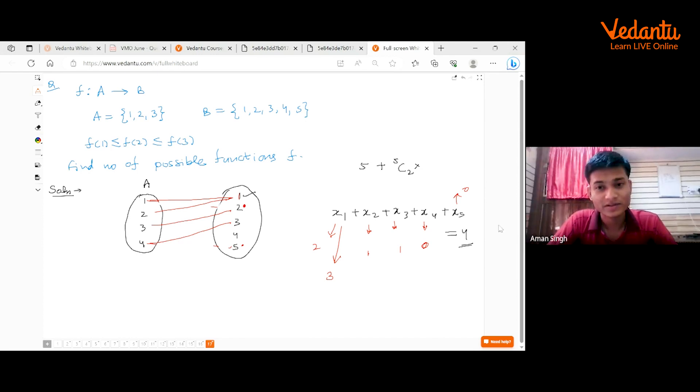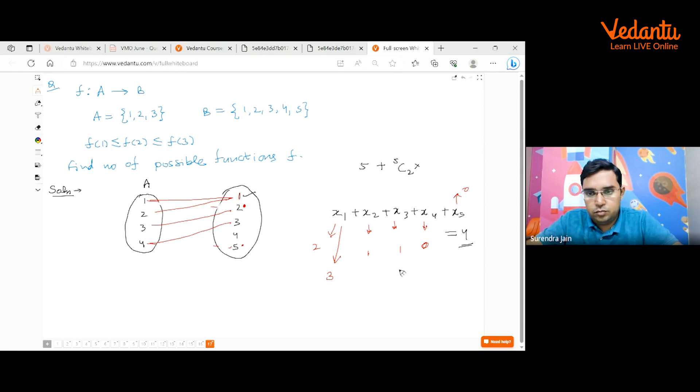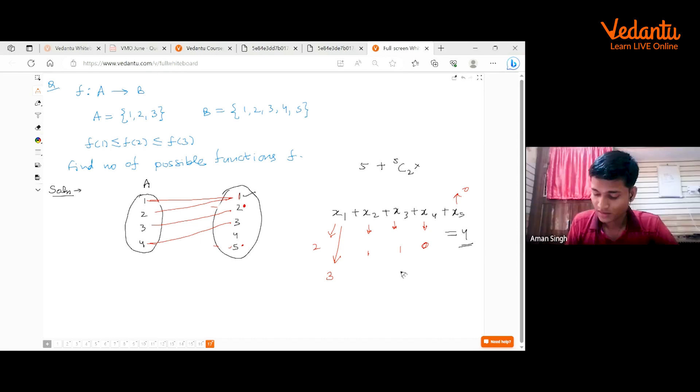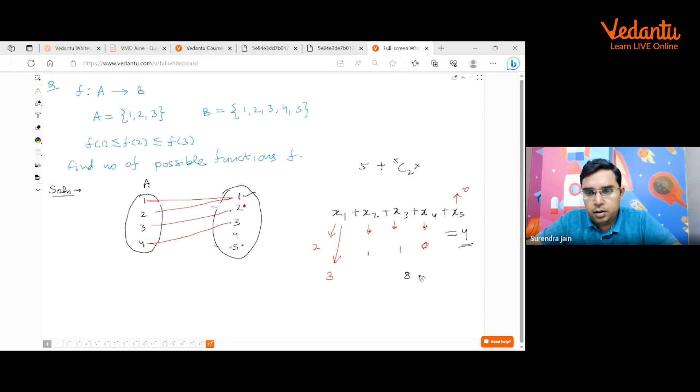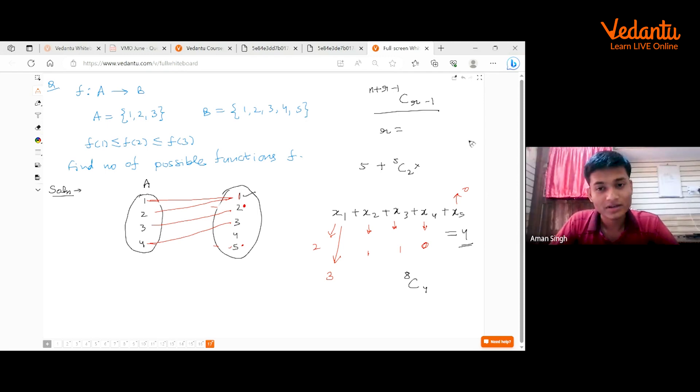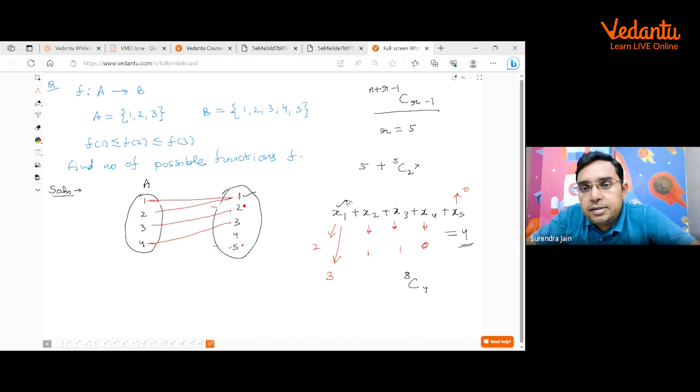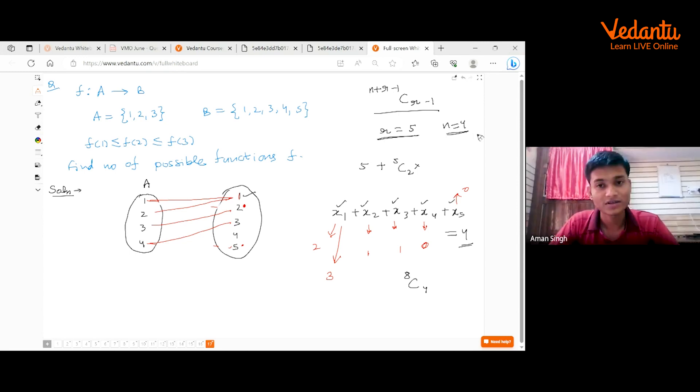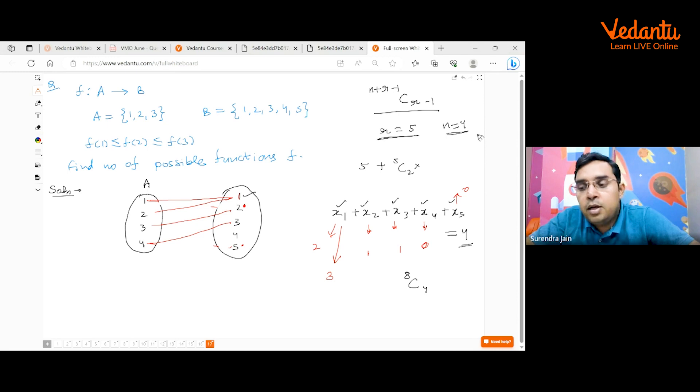So n plus r minus 1, r minus? Kitna aya solve? 8C3? 8C4. C3? 4? 3? 4? Minus one Cr minus one, yes sir. R kya hota is me sir, yeh four ho ga ya nai, r yaha pe five ho ga. Yeh number of beggars hai, yeh x₁ + x₂ + x₃ + x₄ + x₅. Yes sir, yes, r is five, it is not four. N ki value four hai.